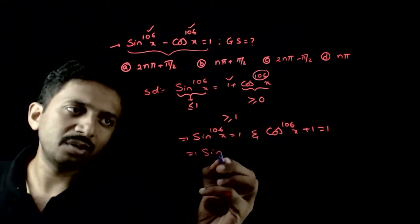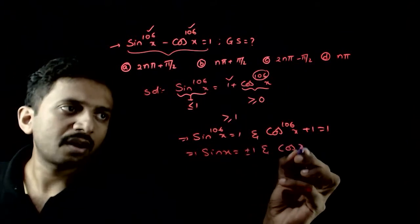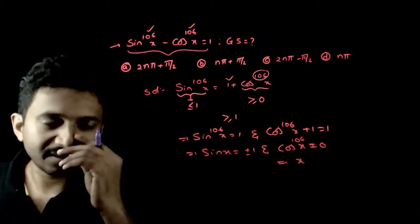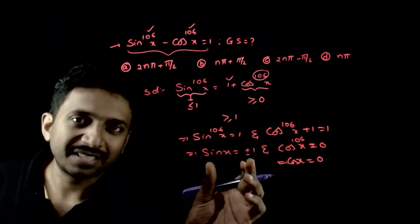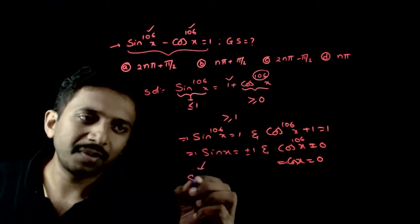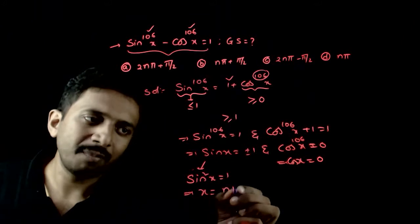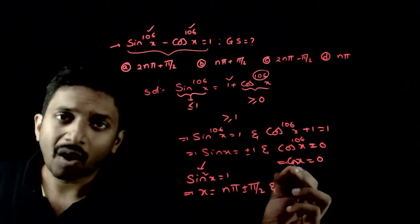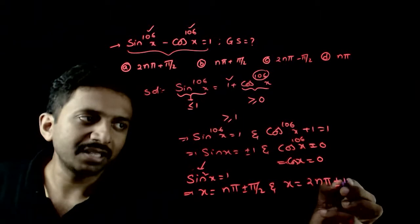This implies sin x can be plus or minus 1, and cos x must be equal to 0. So, sin x must be plus or minus 1 and cos x must be 0. Sin x = ±1 means sin²x = 1, which implies x = nπ ± π/2. And cos x = 0 means x = 2nπ ± π/2.